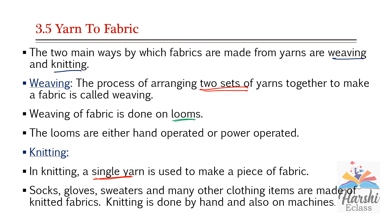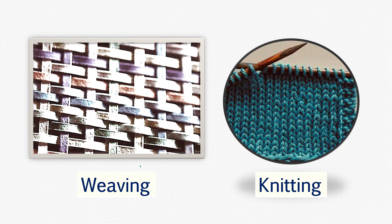Socks, gloves, sweaters, and many other clothing items are made of knitted fabrics. Knitting is done by hand and also on machines. In the knitting process, a single yarn is interlocked continuously with the help of a needle. Knitted fabrics are stretchable. The main difference is: in weaving, two sets of yarns are used, whereas in knitting, only a single yarn is used.